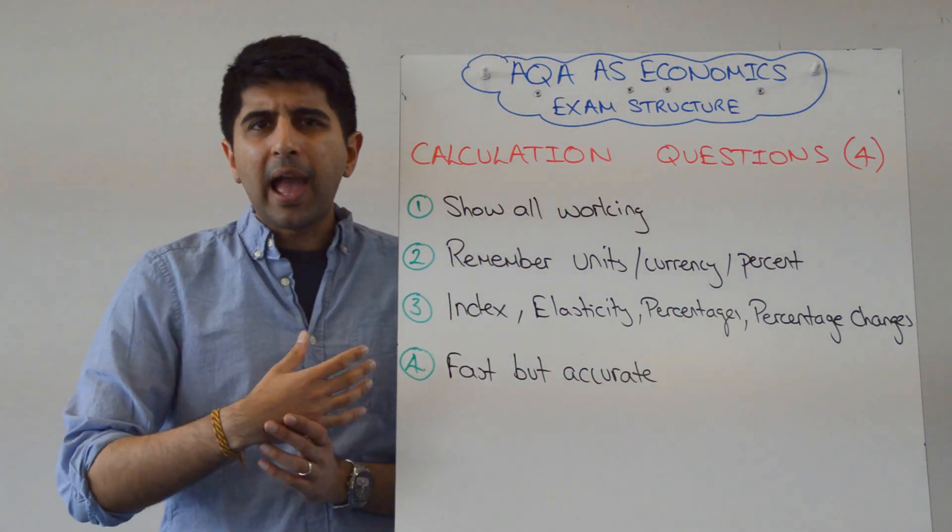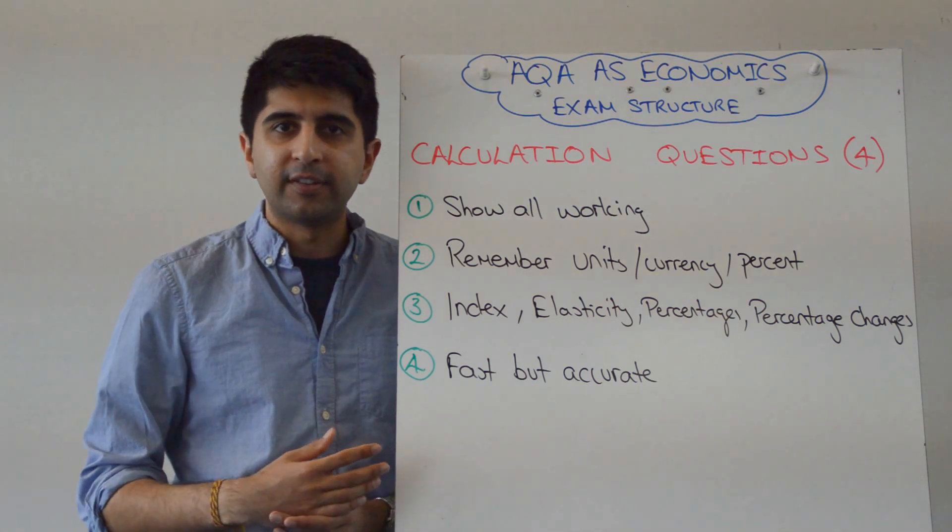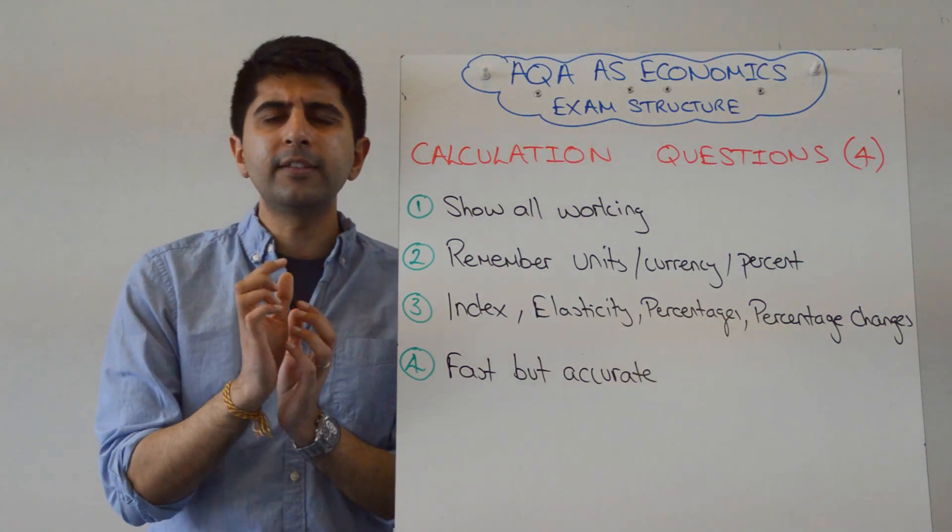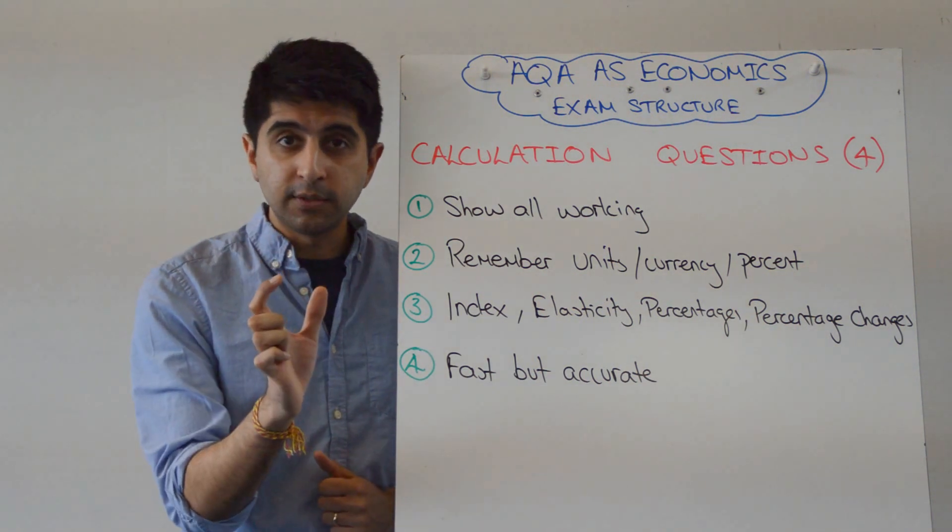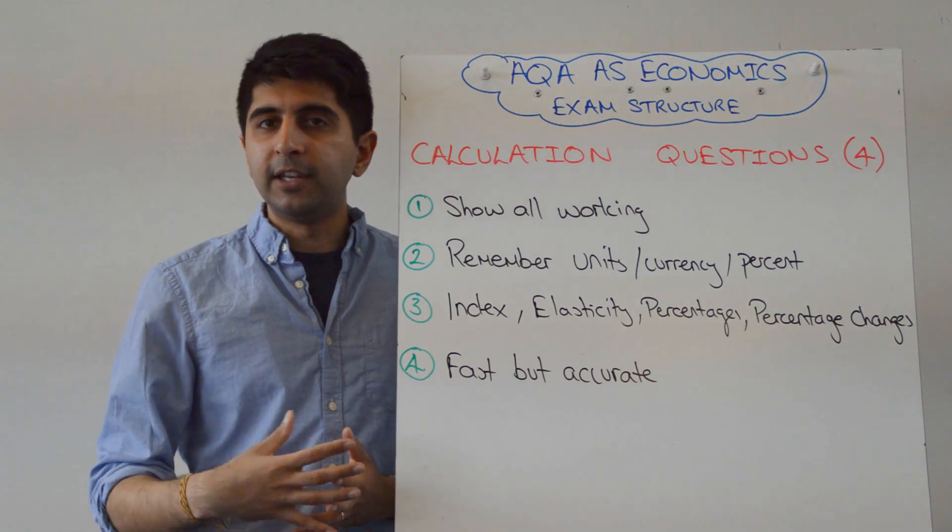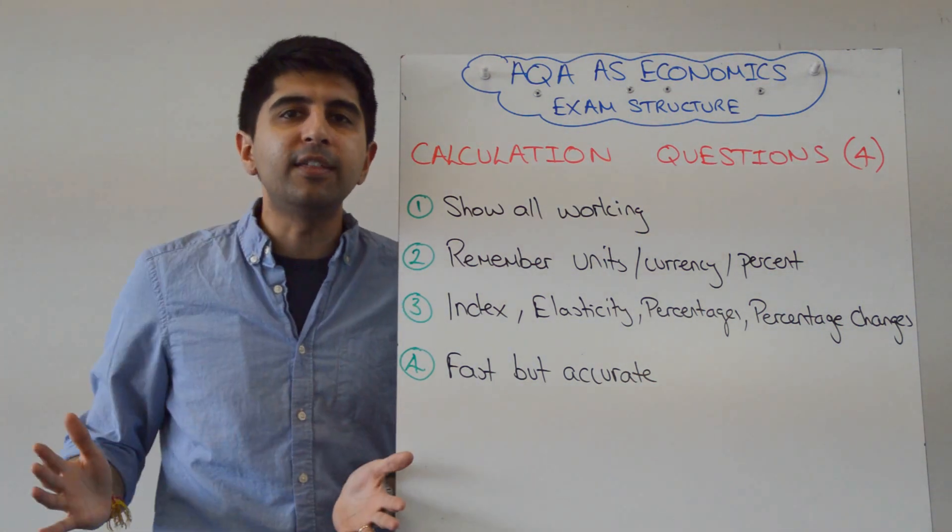But it could be anything where you've learned equations. So something like GDP per capita, for example, real disposable income, for example. Anything that requires knowledge of an equation, you can be asked to calculate. Even like the AD equation, you might need to calculate AD given C, I, G, and X minus M. It could be anything, right?